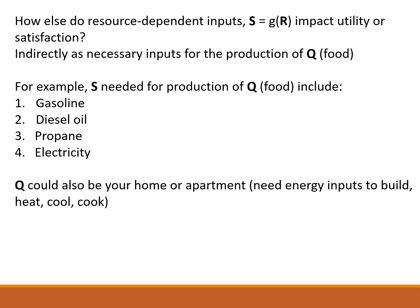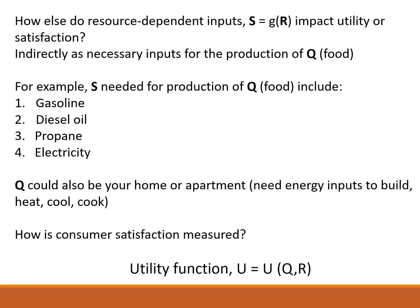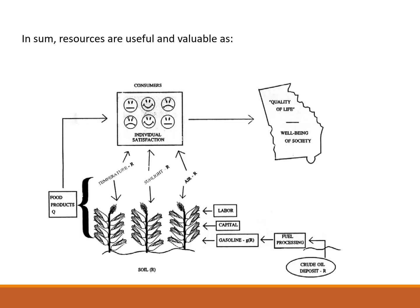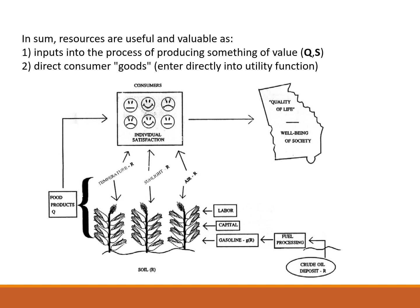Q could also be your home or apartment. Consumer satisfaction is measured as a utility function U, which is a function of Q and R. For example, crude oil is used to produce gasoline; gasoline, capital, and labor are inputs for production of corn. Production of corn is also a function of air, sunlight, and temperature — the natural resources. These natural resources can directly and indirectly provide utility: people can enjoy good weather or the scenic view of a corn field, and indirectly, air provides satisfaction by producing corn and providing food.